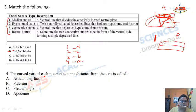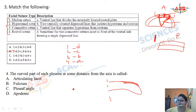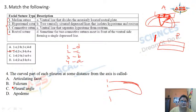Question 4: The curved part of each pleuron at some distance from the axis — the answer is Fulcrum (B). Question 5: Posterior extension of the last Pygidial segment to form a spine-like structure — the answer is Telson (A). Pleural spine refers to a spine in the thoracic pleuron segment; genal spine is found in the Cephalon.